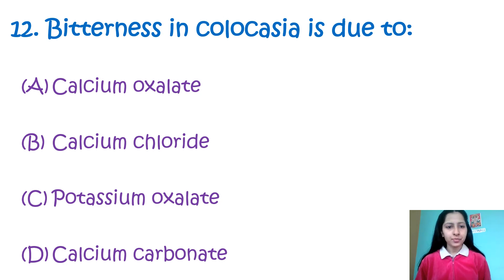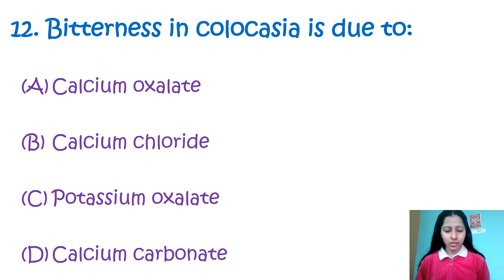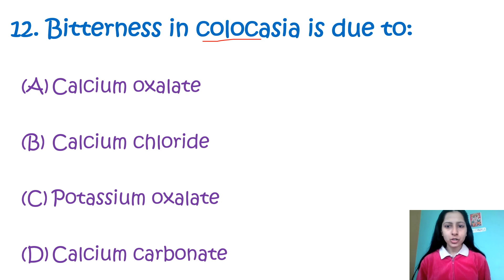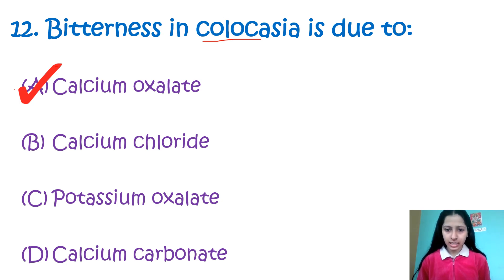Question number 12: Bitterness in colocasia is due to — Option A: calcium oxalate, Option B: calcium chloride, Option C: potassium oxalate, Option D: calcium carbonate. Colocasia — in Hindi, what we call the leaves of arbi. This bitterness is due to the presence of calcium oxalate — that is option number A.